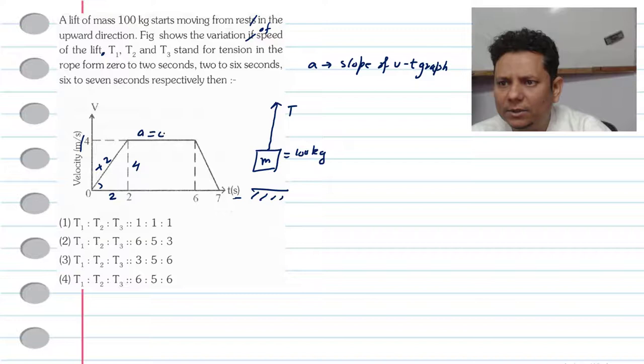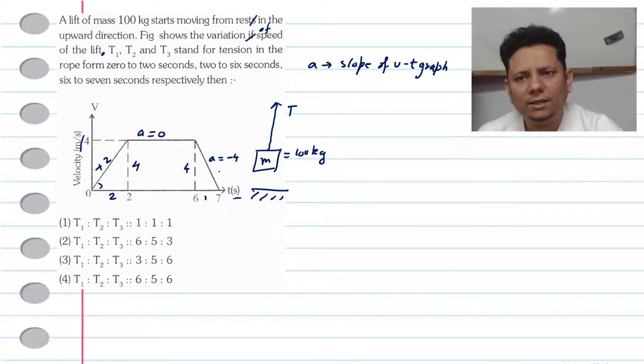Here your acceleration will be equal to zero because the slope is flat. Here the acceleration is 4 over 1, so here acceleration will be equal to minus 4. Note that the slope is negative, so acceleration is minus 4.